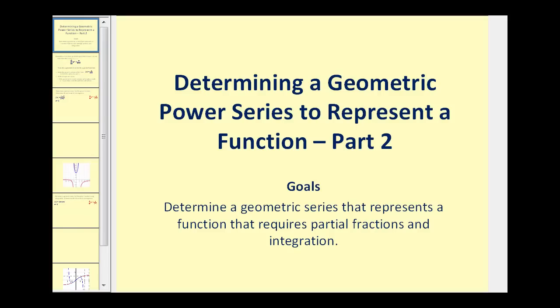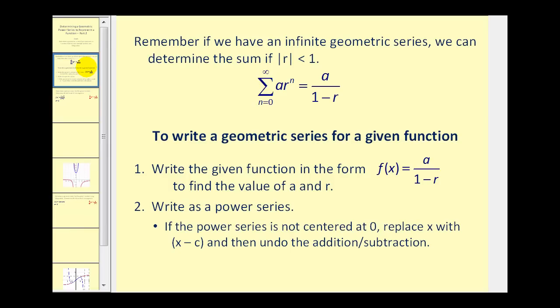Welcome to part two of determining a geometric power series to represent a function. Let's start with a quick review. We know that this infinite geometric series will converge as long as the absolute value of r is less than one, and the sum is equal to a, the first term, divided by one minus r. So if we have a function and can write it in this form, we can rewrite the function as a power series. We've already done a couple examples in part one, so let's go ahead and take a look at some additional examples in this video.